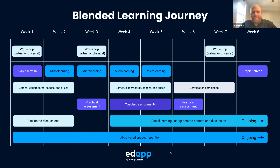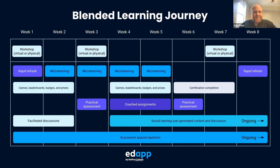Then you start your micro learning in weeks two through five, with practical assessments in between to check for real behavioral changes. At the bottom, AI-powered spaced repetition runs continuously — you turn it on at the start and it gives a quiz to all employees at a frequency that helps with retention. If they got something wrong in the micro learning, that question might pop up the same weekend to reinforce education.